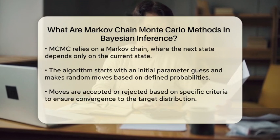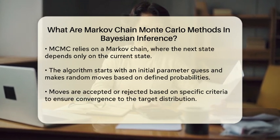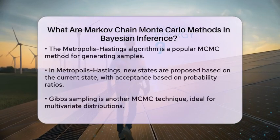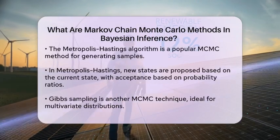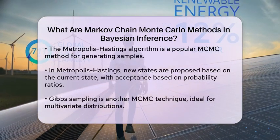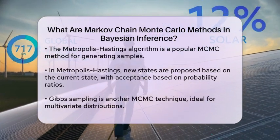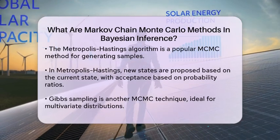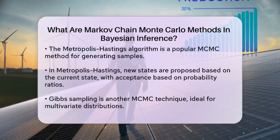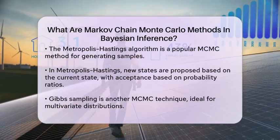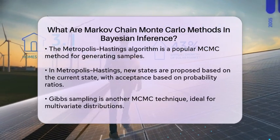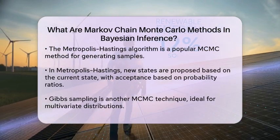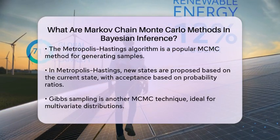One popular MCMC algorithm is the Metropolis-Hastings algorithm. It generates samples by proposing a new state based on the current state and then deciding whether to accept or reject this new state based on the ratio of the probabilities of the proposed and current states. This process continues until a sufficient number of samples are collected.